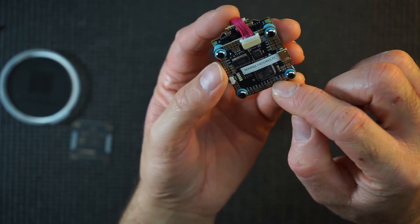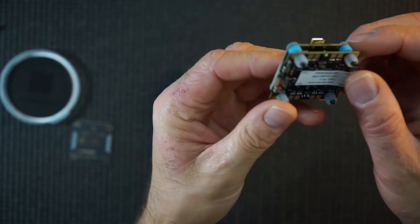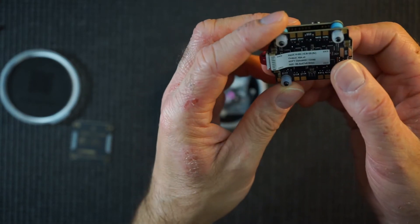Down here is for your S-Bus, your Crossfire. These little ones are your LEDs. And obviously your ESC stack.